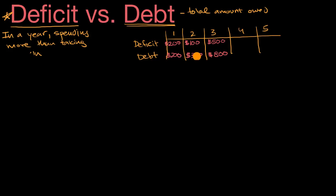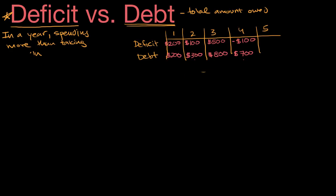Of course, you can pay down debt. In order to pay down debt, you would run a surplus in a year, which you could view as a negative deficit. So let's say year four is negative 100 billion — normally people wouldn't say negative 100 billion dollar deficit; they would say the government ran a 100 billion dollar surplus. So they pay down the debt, and now we owe 700 billion. You could also have a year with a completely balanced budget — not running a surplus or deficit — and in that case your debt would stay the same.